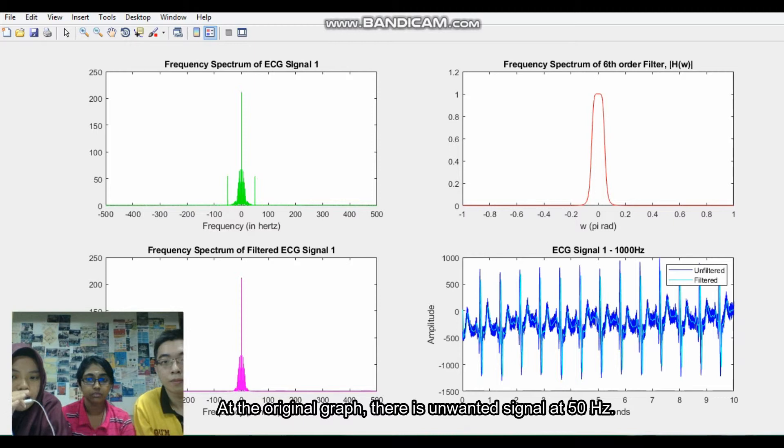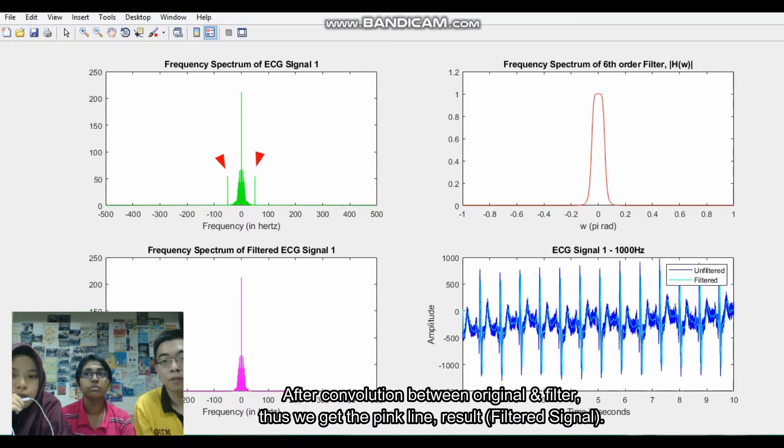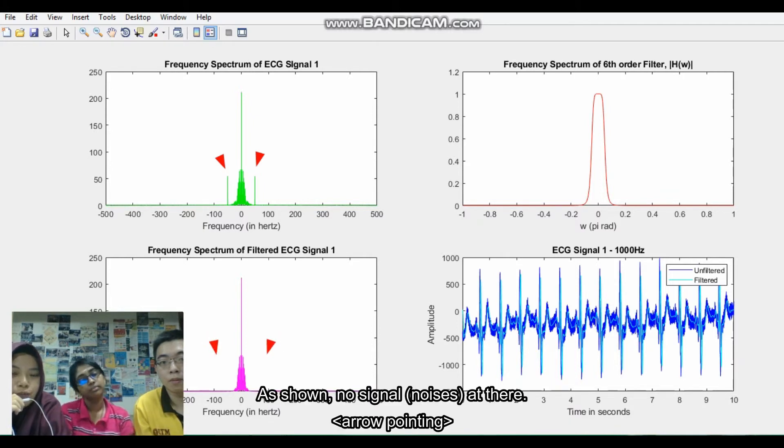And at the original plot, we have unwanted signal where it is lost at 50Hz, and the red line is the filter. After the convolution between original and filter, thus we get the thin line result and we have filtered and that shows no noise at there.